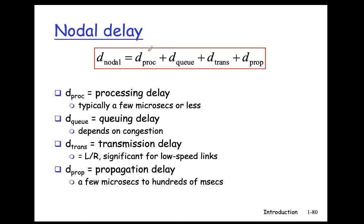Let's sum up packet delay. There are 4 components: processing delay, queuing delay, transmission delay, and propagation delay. Processing delay is typically microseconds, so we often ignore it when calculating packet delay. Transmission delay is L divided by R — this quantity is often significant, especially for low-speed links. Propagation delay is slightly harder; it varies quite a bit from microseconds to hundreds of milliseconds. The extreme case is satellite links, which can go up to 200 milliseconds or more. Transatlantic or trans-pacific fiber optic links can also take up to 100 milliseconds.